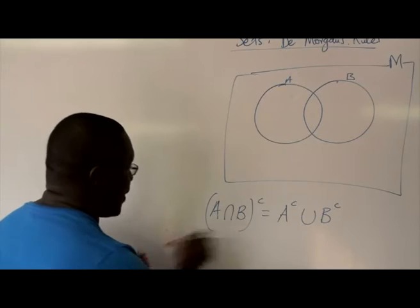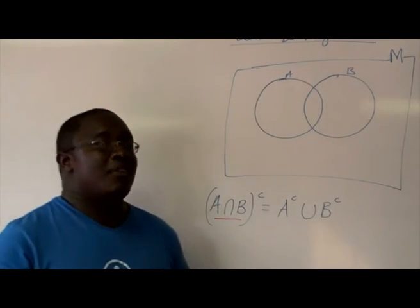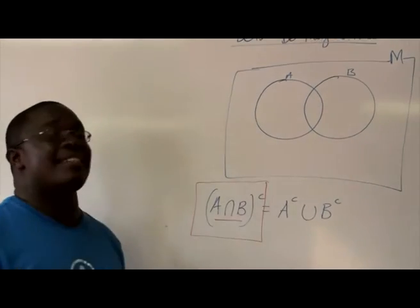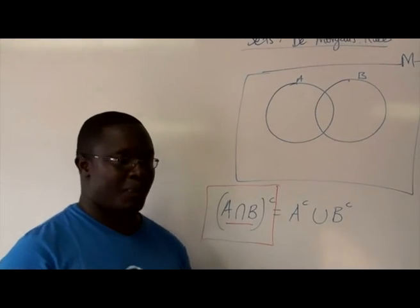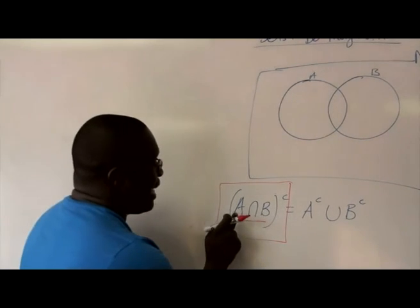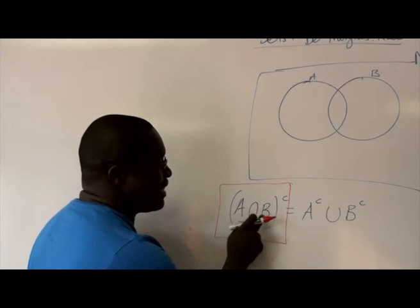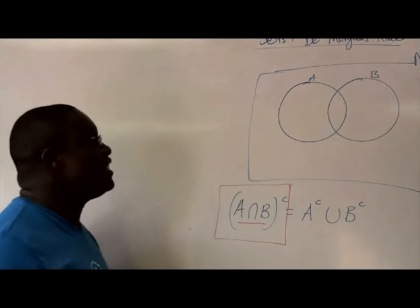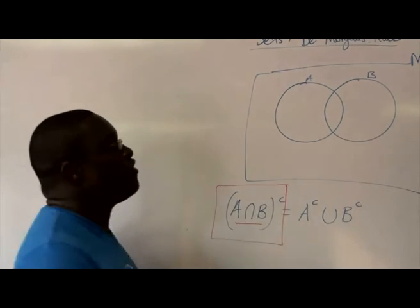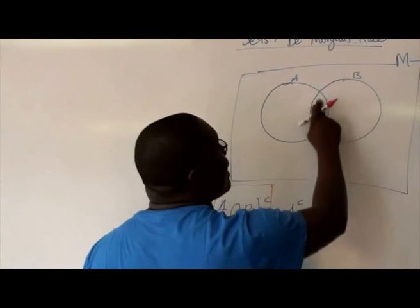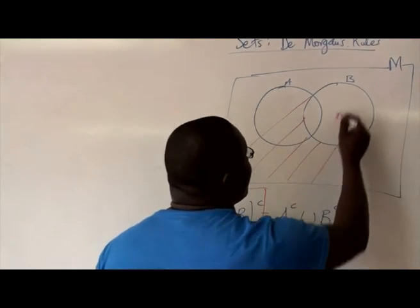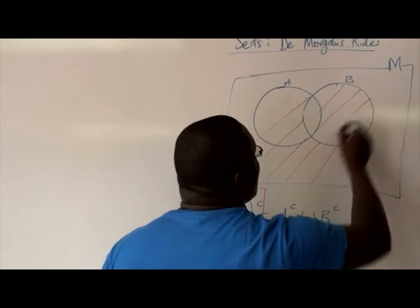I'll use red for this side. Let us read the left-hand side statement in plain English. Remember, complement means 'not in.' So we're saying (A intersection B) complement — that means not in A intersection B. A intersection B is the overlapping region.